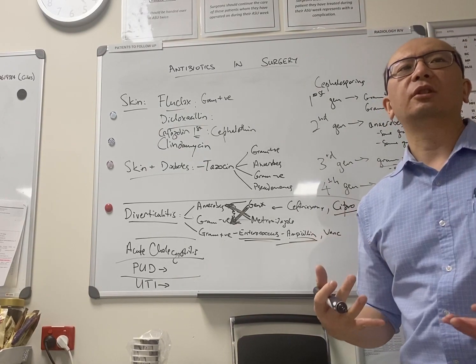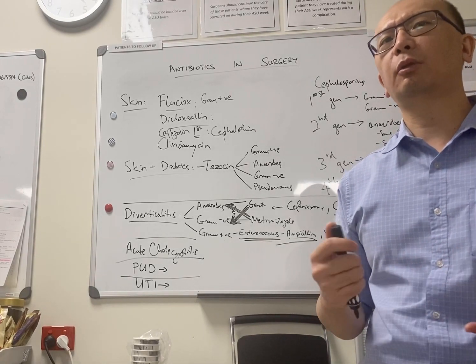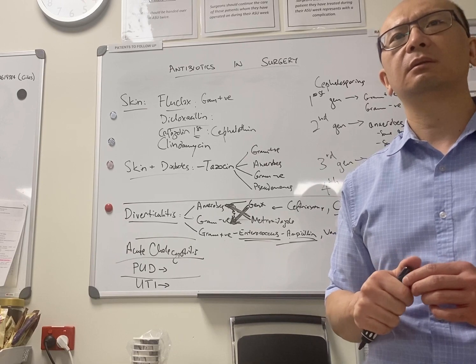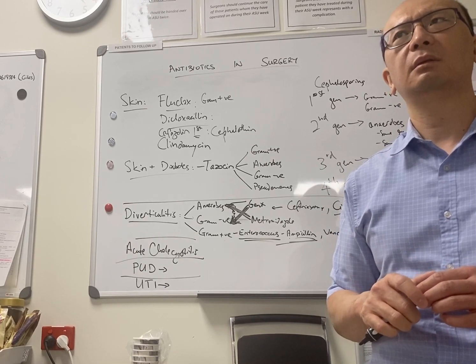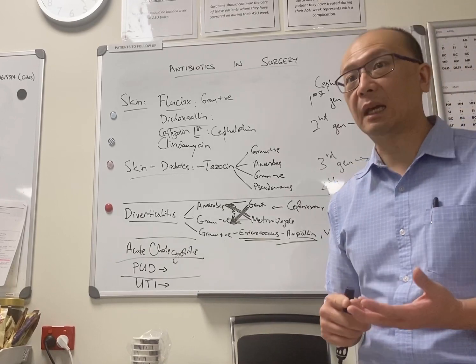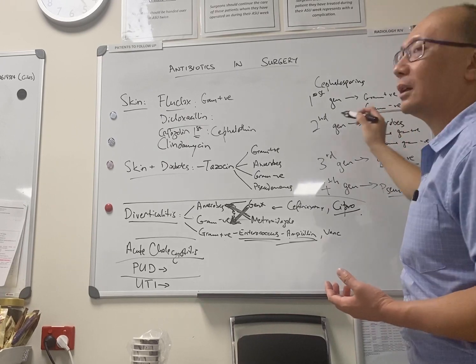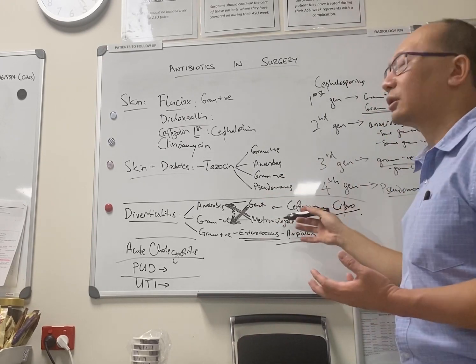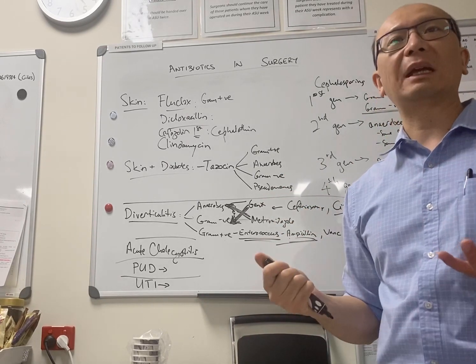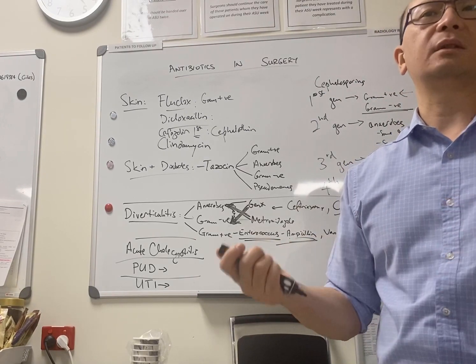Okay. In intra-abdominal surgery, if you're doing a gallbladder or an appendix, what prophylaxis do we generally give? Ceftriaxone. Yeah, I generally want to cover gram-negative and anaerobes. And I'm generally happy that the small amount of gram-negative cover plus metronidazole is good enough in a prophylactic sense for an appendix or gallbladder.